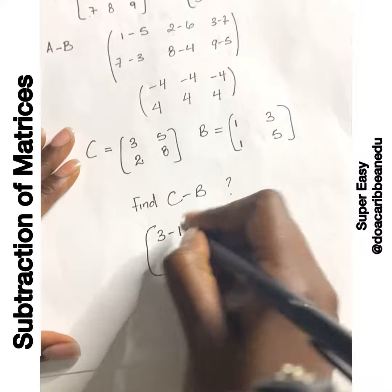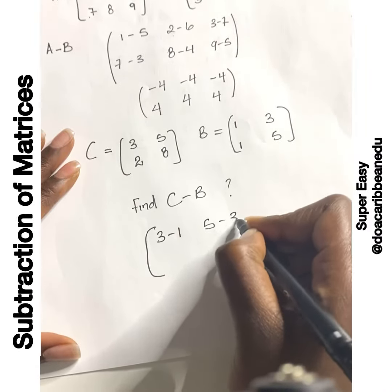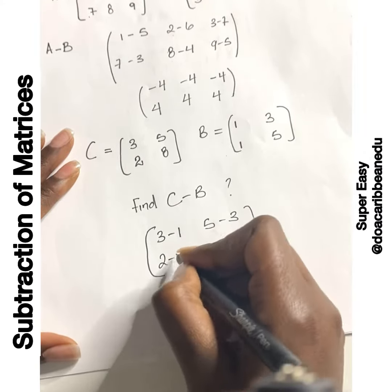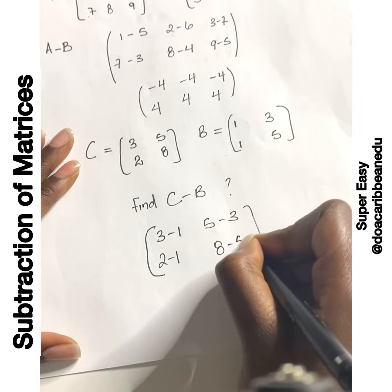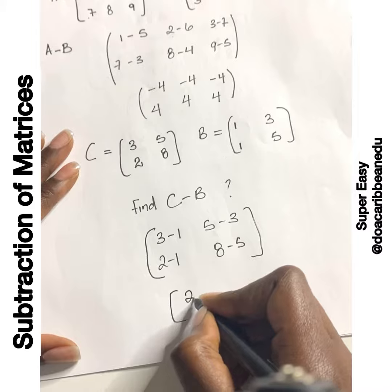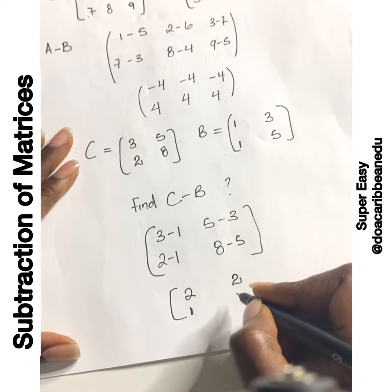3 minus 1, 5 minus 3, 2 minus 1, and 8 minus 5. This should give us 2, 2, 1, 3.